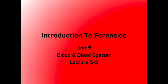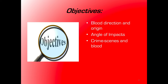This is the final lecture for blood and blood spatter. This lecture expands on topics from previous videos and cases, with emphasis on blood direction and origin, a brief introduction to stringing and how those calculations work, angles of impact, and tools crime scene investigators use for identifying or locating blood at a crime scene.